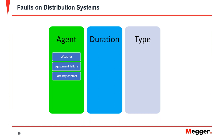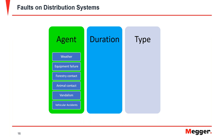Animal contacts are another cause — birds touching lines with their wings, or snakes and rats producing short circuits. These are typically short-duration faults but can last longer if the animal cannot get away. Vandalism is also a factor; sometimes damage to the network is produced intentionally. Vehicular accidents — a car or truck crashing against a pole or a house — can also cause faults in a distribution system.